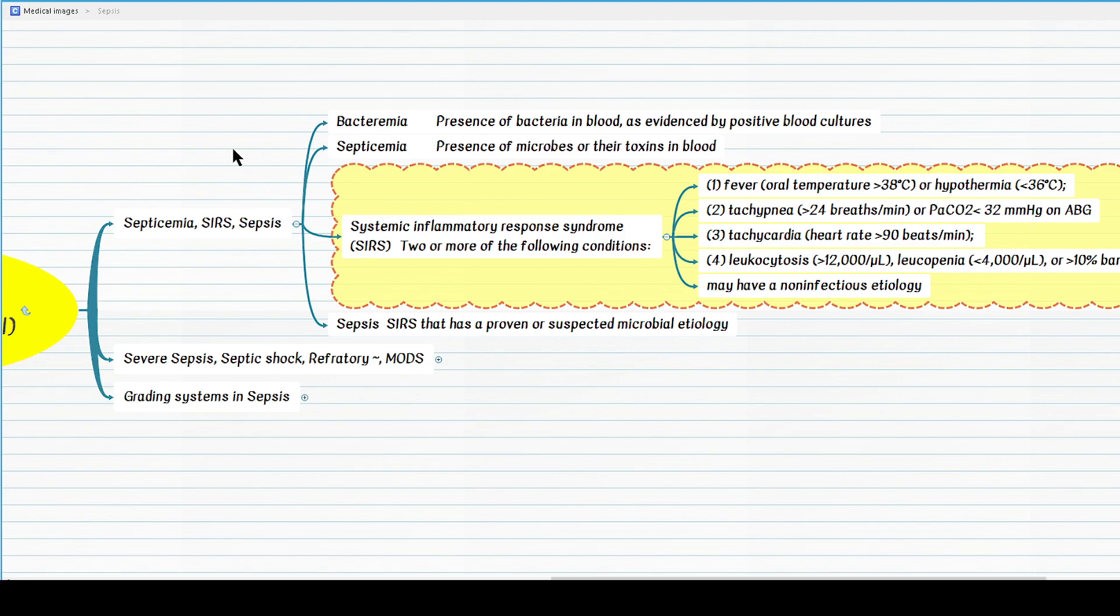What's the tachycardia requirement for SIRS? While in cardiology, tachycardia is defined as any heart rate greater than or equal 100 beats per minute. For SIRS, we define a heart rate greater than 90 beats per minute as a criteria for fulfilling the SIRS requirement.